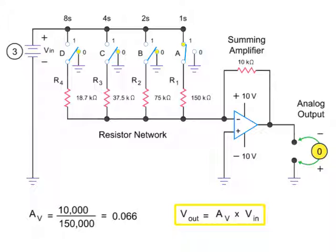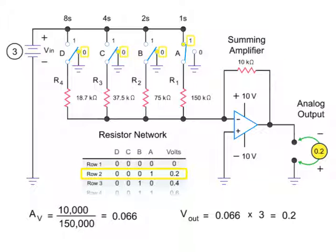Now, the output voltage can be calculated by multiplying the gain by the input voltage of 3 volts. Thus, the product of the amplifier gain of 0.066 and 3 volts is 0.2 volts. Thus, a binary input of 0001 yields an output of 0.2 volts in accordance with the truth table described previously.